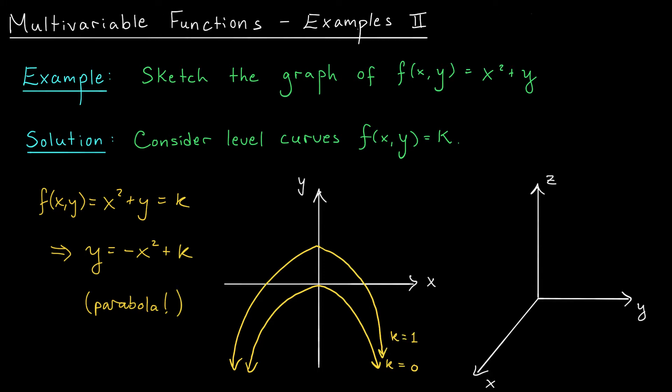Similarly, when k is minus 1, the parabola shifts down. y equals minus x squared minus 1. I think I get the idea here. So I'm going to go ahead and use this contour plot, raise my level curves up, and build my exoskeleton.